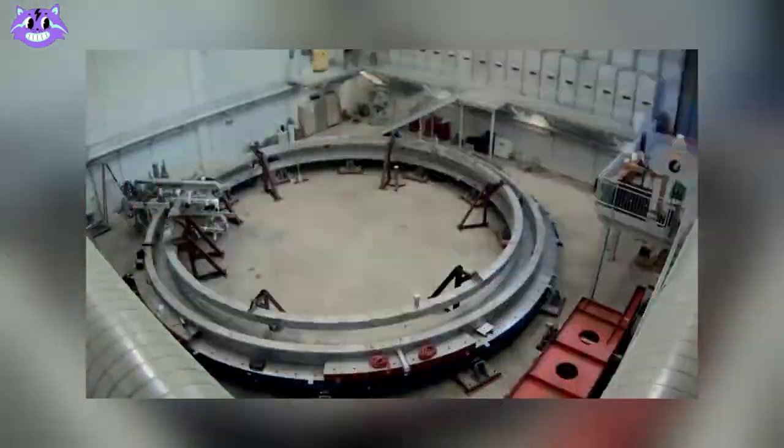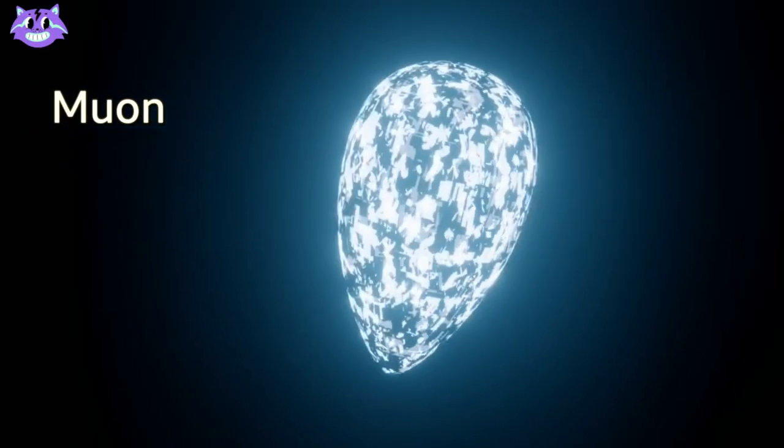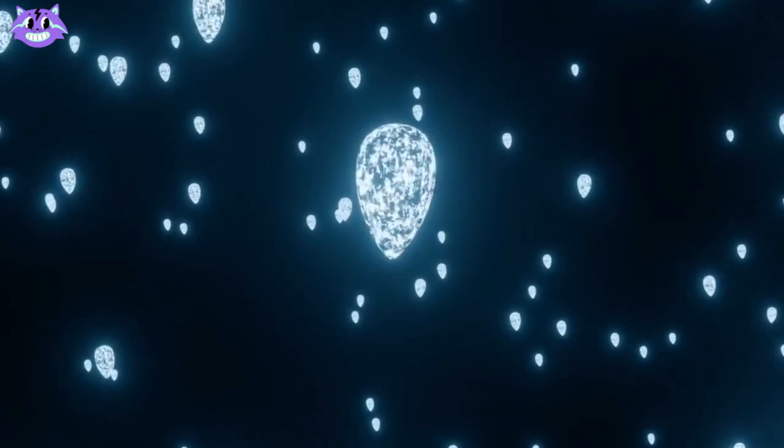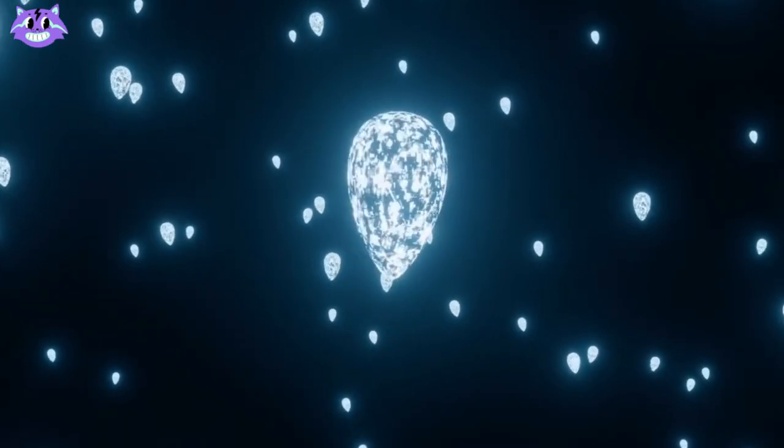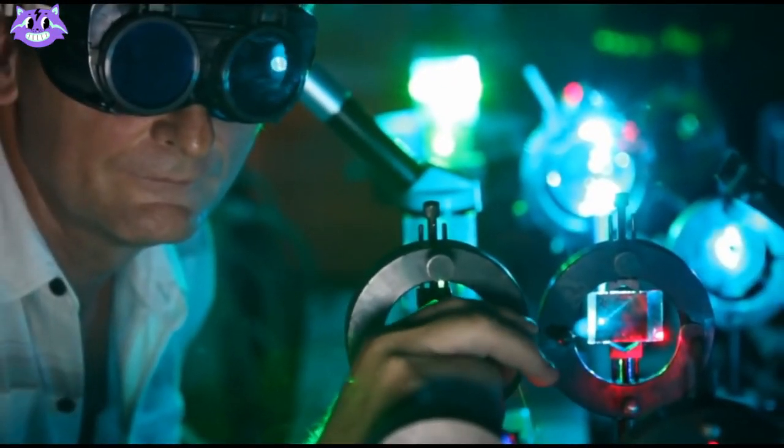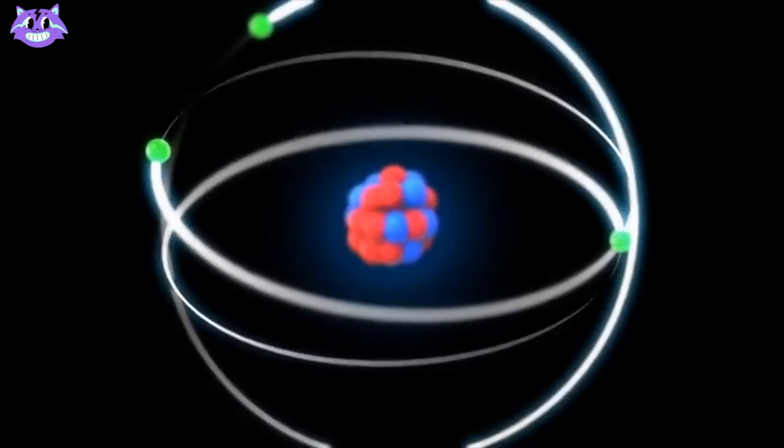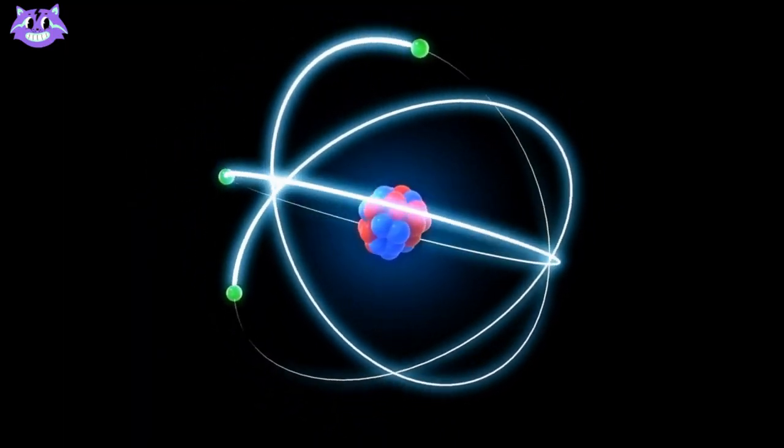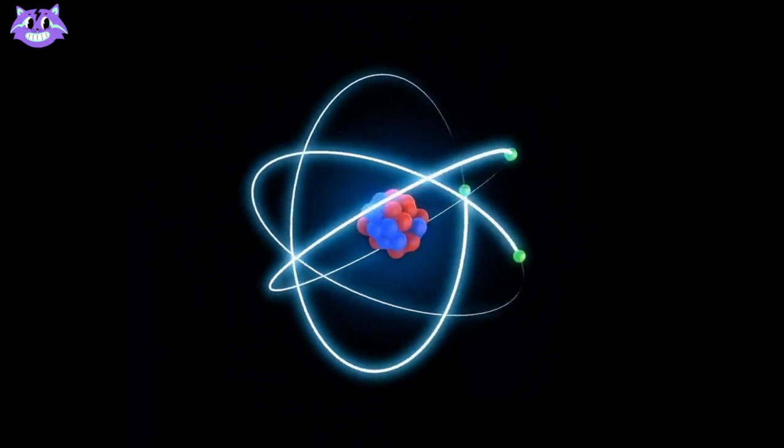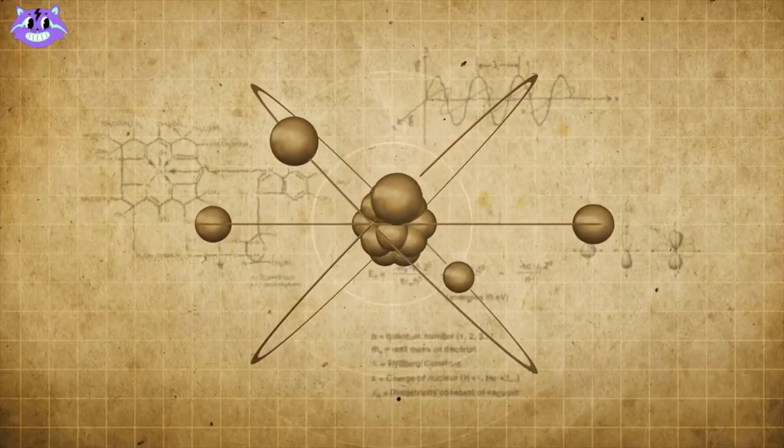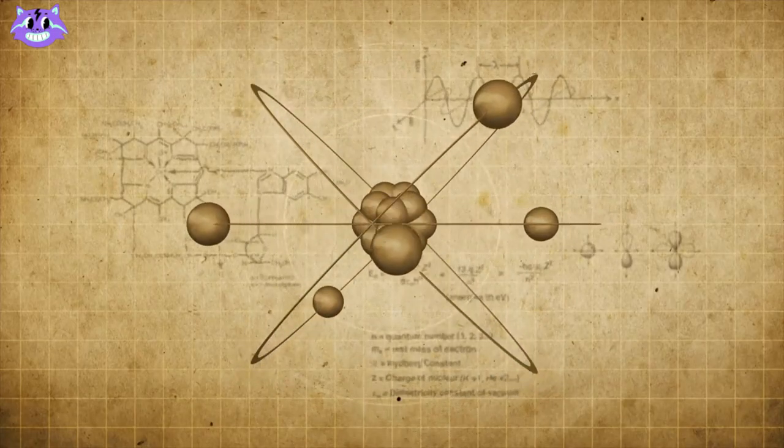The research team at Fermilab has been studying muons for many years. Muons are similar to electrons, but they are about 200 times more massive. In an experiment called G2, the researchers accelerate muons around a 15 meter diameter ring and measure how much they wobble. The researchers found that the muons wobbled faster than the standard model predicted.